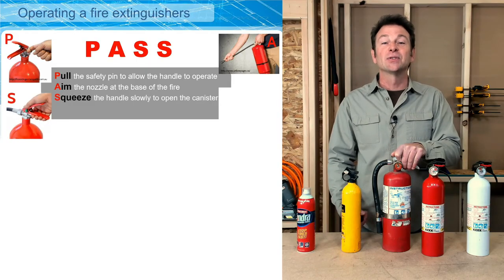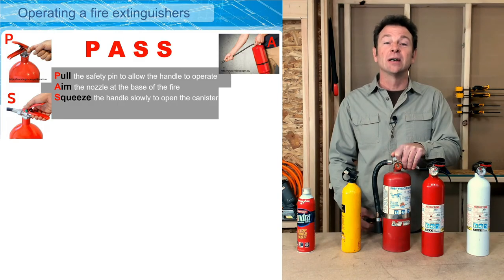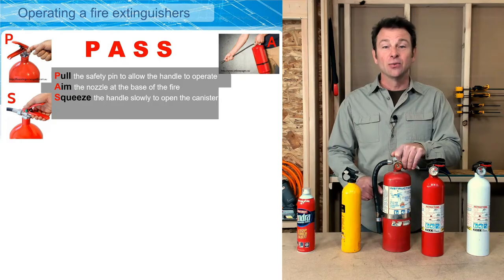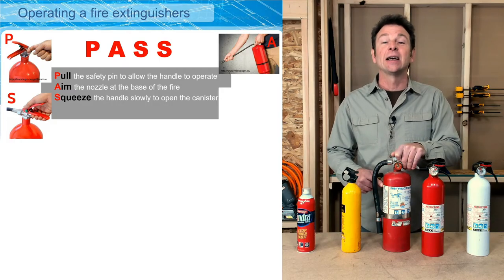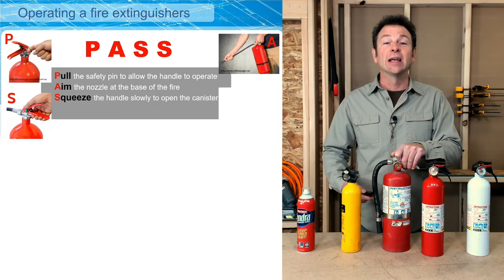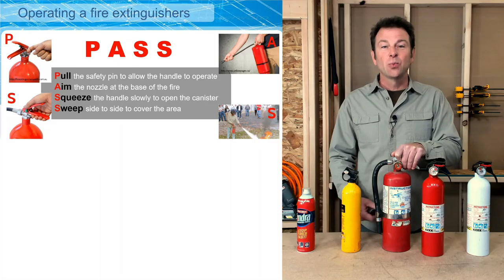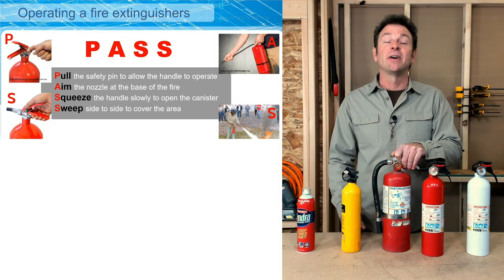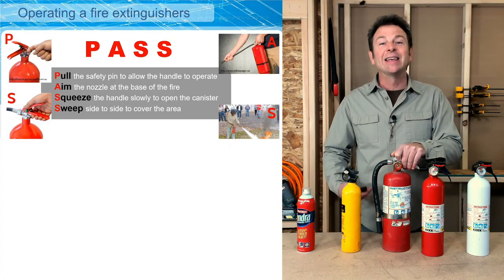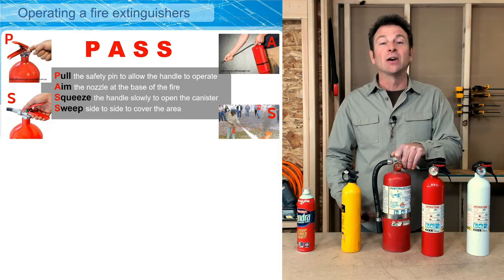S is for squeeze the handle. As you squeeze, it allows the contents to come out of the nozzle and treat the fire. The final S stands for sweep — sweep the nozzle back and forth at the base of the fire. This eliminates oxygen to the fire, which helps extinguish it.